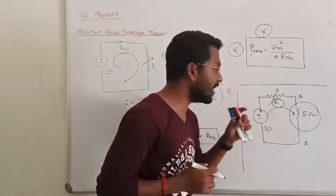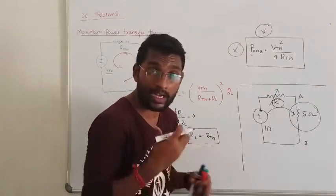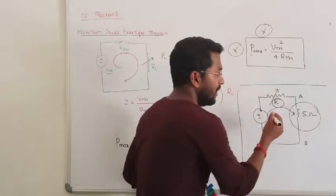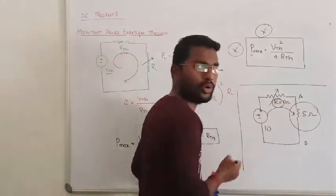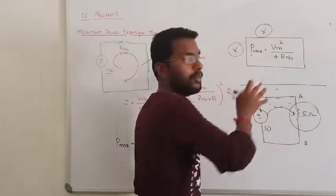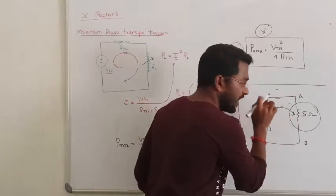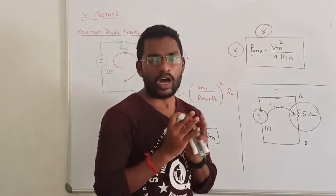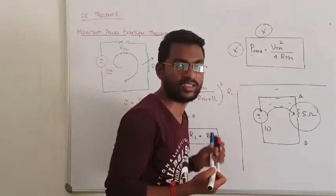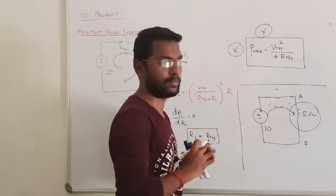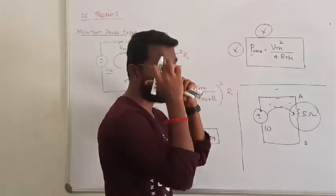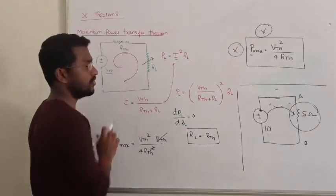Think logically: if you make the internal source resistance zero, then you can transfer maximum power to the load. So for questions where the source resistance is variable and the load is fixed, the answer is to make the source resistance zero, not to apply the maximum power transfer theorem directly.